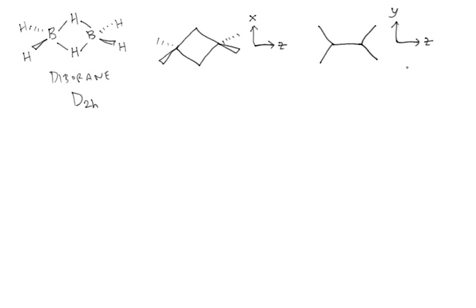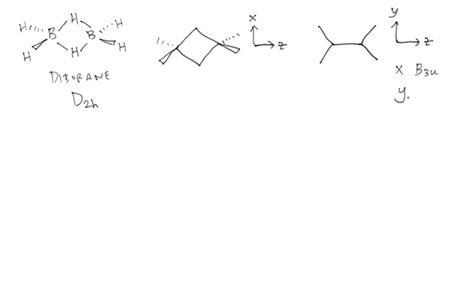For your reference, from the D2H character table: something with the symmetry of a PX orbital belongs to the B3U irreducible representation of D2H; something with the symmetry of a PY orbital belongs to the B2U irreducible representation; and something with the symmetry of a PZ orbital belongs to the B1U representation.